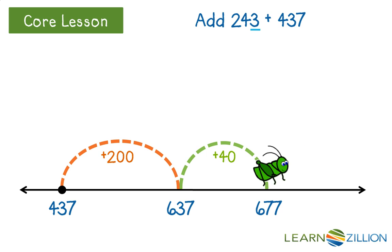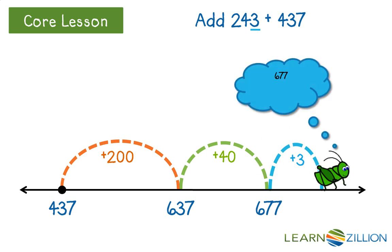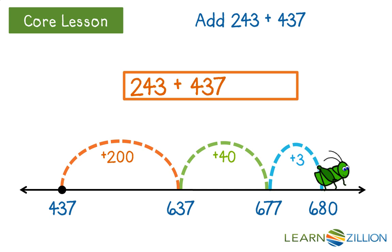Our last hop is our ones place, plus 3. We think, what is 677 plus 3? It's 680, and we mark that on the number line. We just completed 243 hops in three quick steps and found our answer. 243 plus 437 equals 680.